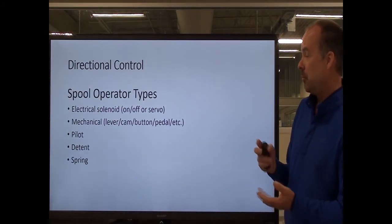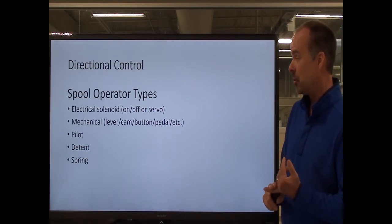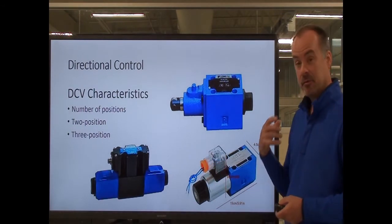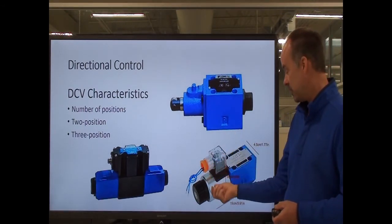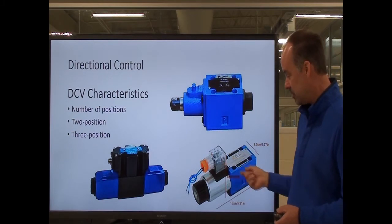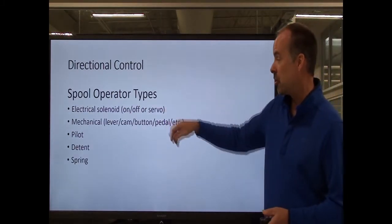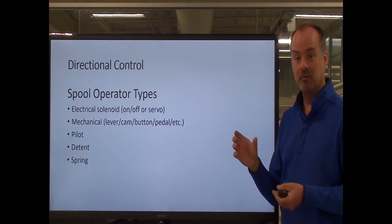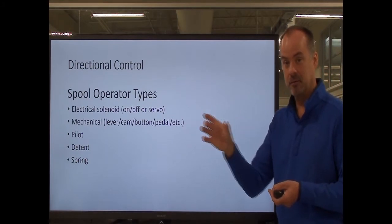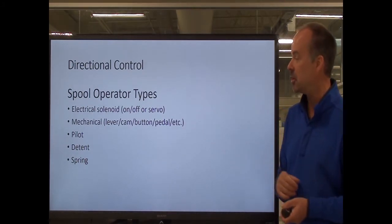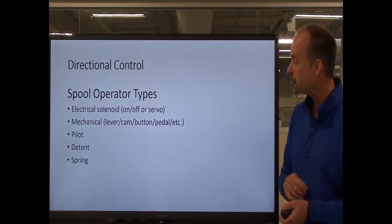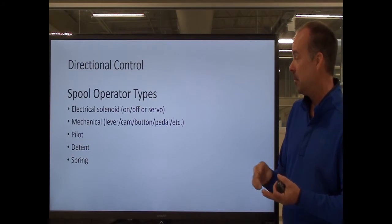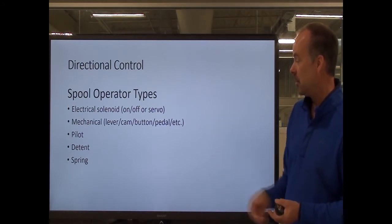Spool operators: you can have electrical solenoids — the valve is either on or off. Energize it and the spool shifts; de-energize it and the spool shifts back. Or it could be a servo, which allows an analog signal — it's not just on or off. You can shift the spool a little bit, a lot, or anywhere in between, giving you infinite adjustment on how far you shift that spool. It could also be a mechanical operator: a lever, a cam, a push button, or a pedal.